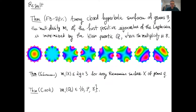The end result we prove together with Ram is the following. We show that among all closed hyperbolic surfaces of genus 3, the multiplicity of the first positive eigenvalue of the Laplacian, which we denote by M₁, is maximized by the Klein quartic, where the multiplicity is equal to 8.